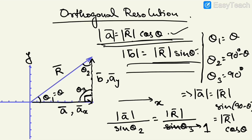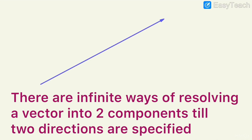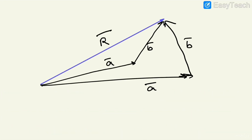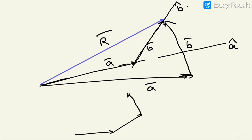Orthogonal resolution is not the most general form; oblique resolution is. Resolution means: given a vector R, find two vectors which add up to give R. There are infinite possible ways. But once directions are specified — say â-cap and b̂-cap — you get a specific unique A vector and B vector. Without specifying directions, there are infinite possibilities. Resolution can also be into three or more components, which becomes more complex.